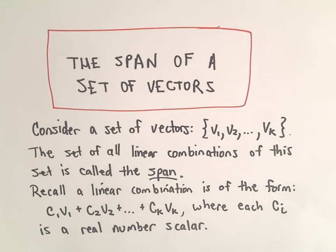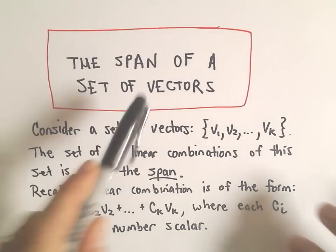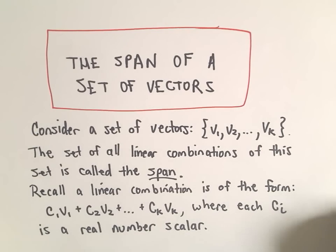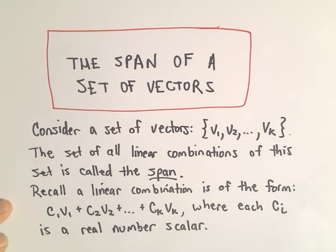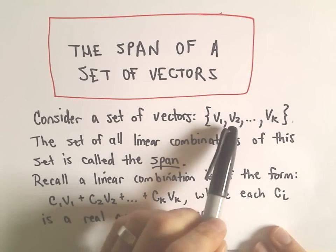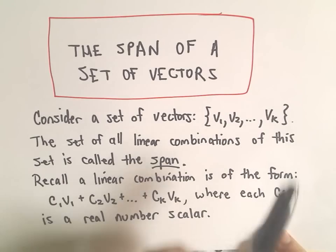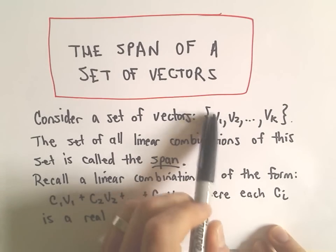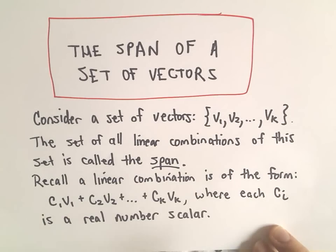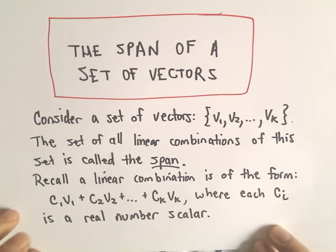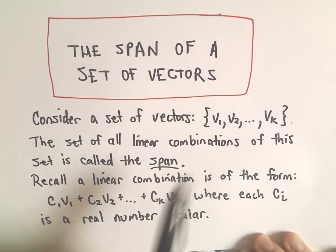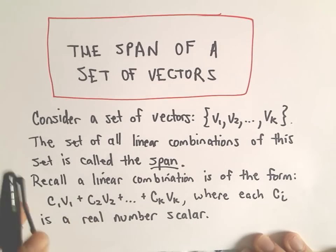In this video I want to start looking at the notion of what's called a span of a set of vectors. We'll start off with some definitions, and then look at some examples. The idea is we've got a set of vectors v1, v2, up to v sub k. We look at the set of all linear combinations of this set of vectors, and that's what's known as the span.